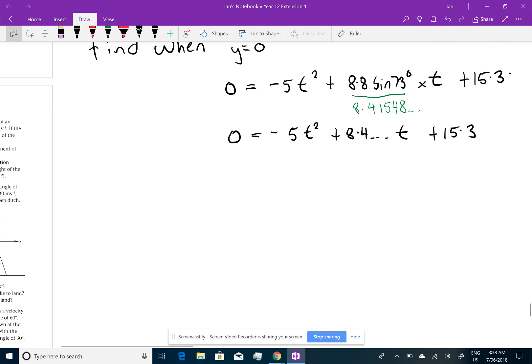So, I'm going to have to use the quadratic formula. Now, if you look at the notes that I put on the website, I've multiplied through by a negative, but I'm going to do the quadratic formula with a negative so you understand that it can work. So, t is going to equal two values. So, it's minus b minus 8.4 dot dot dot plus or minus the square root of 8.4 dot dot dot all squared minus 4 times negative 5 times 15.3 all over 2 times negative 5.